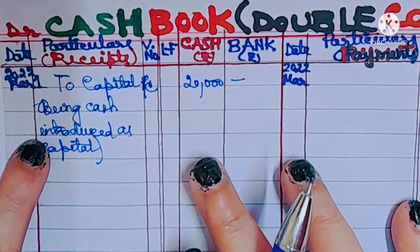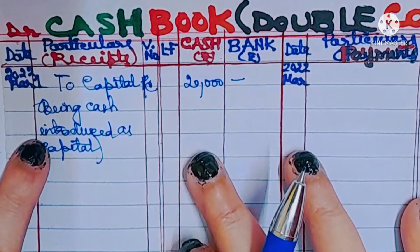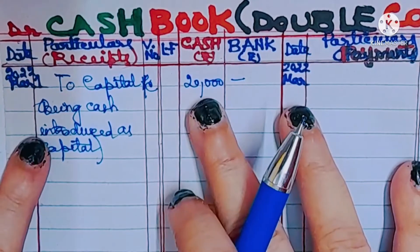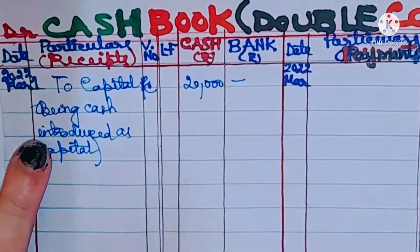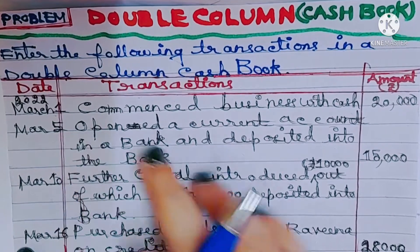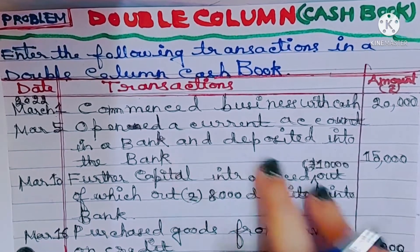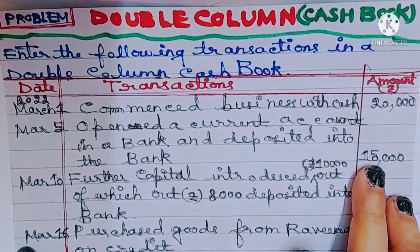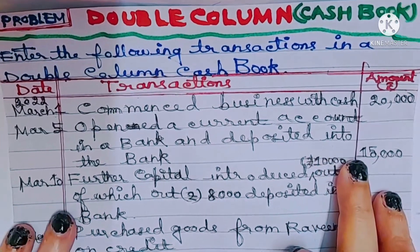From the business point of view, when the proprietor introduces cash into the business, cash comes in, so 20,000 will be debited. The next transaction is on 5th March: open the current account in a bank and deposit into the bank 15,000. That means cash is deposited into the bank.